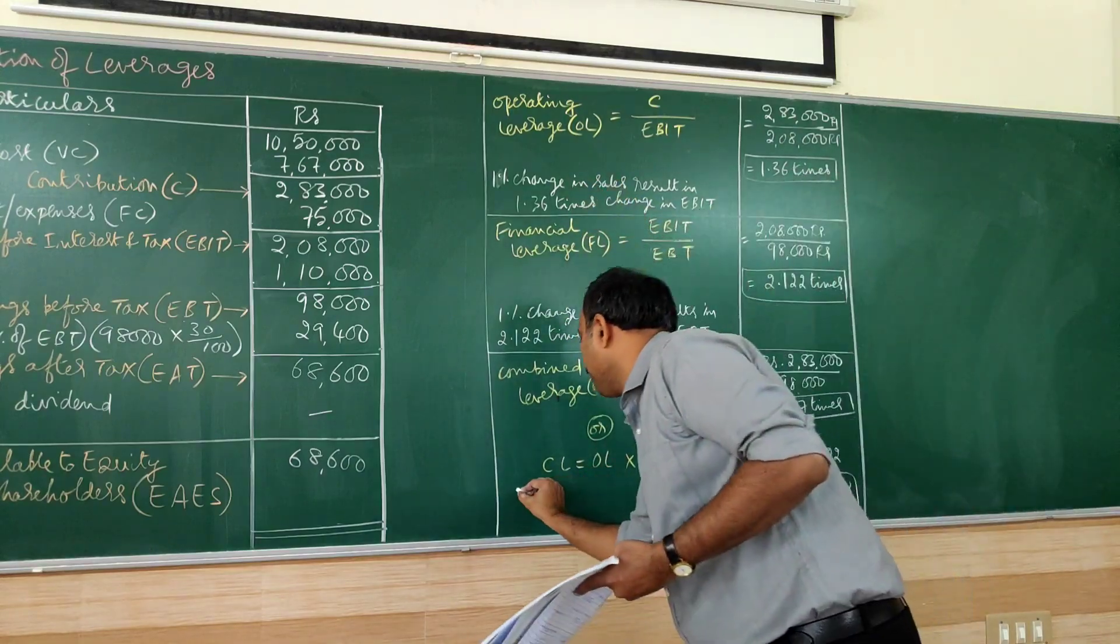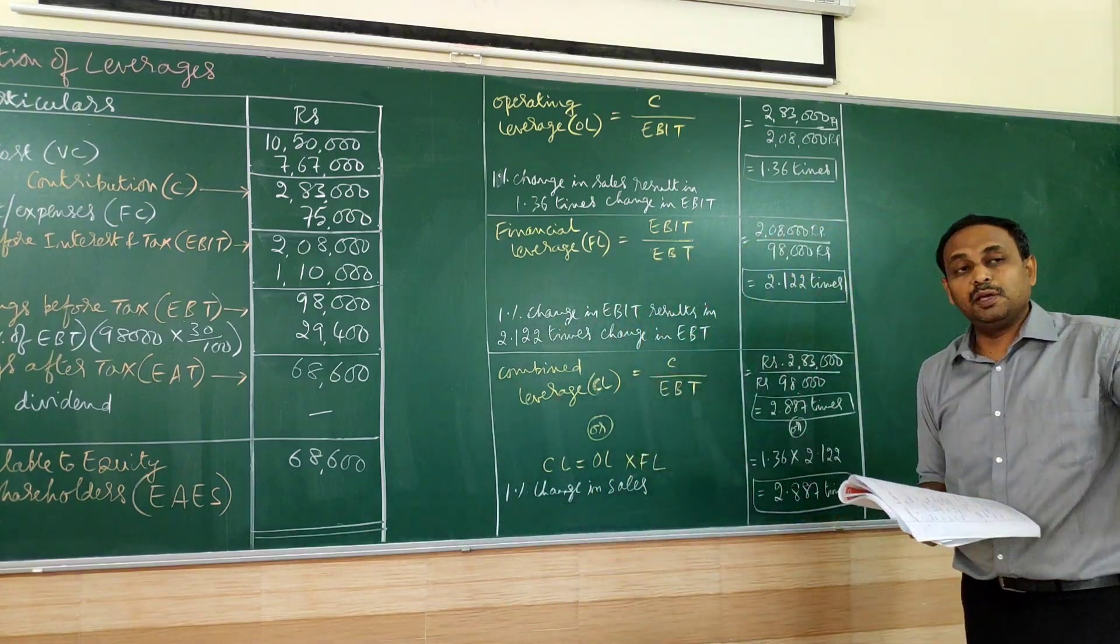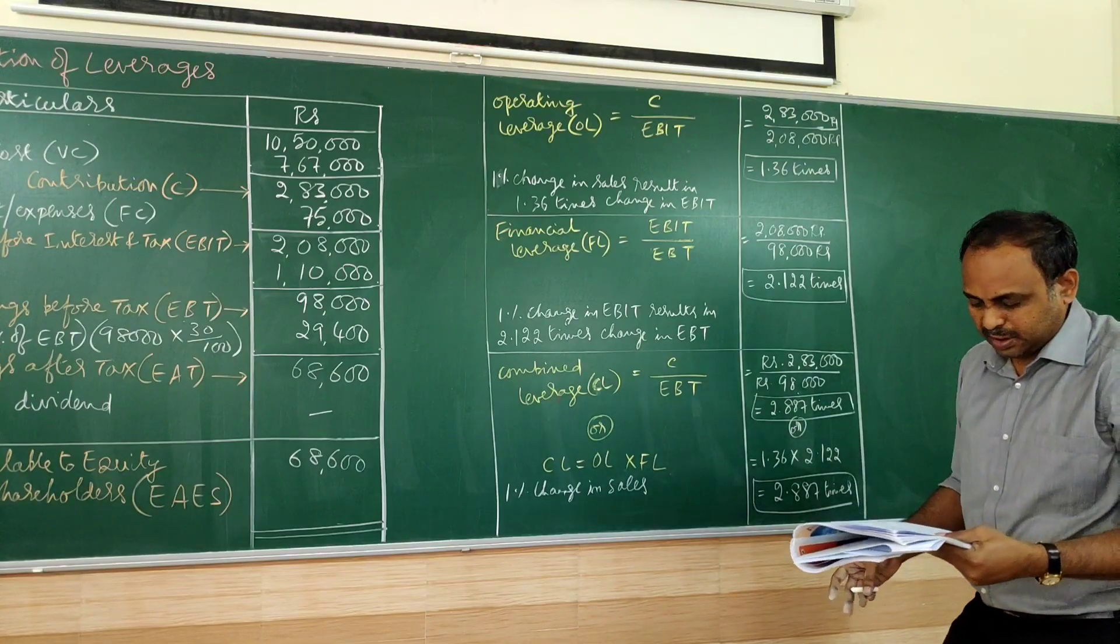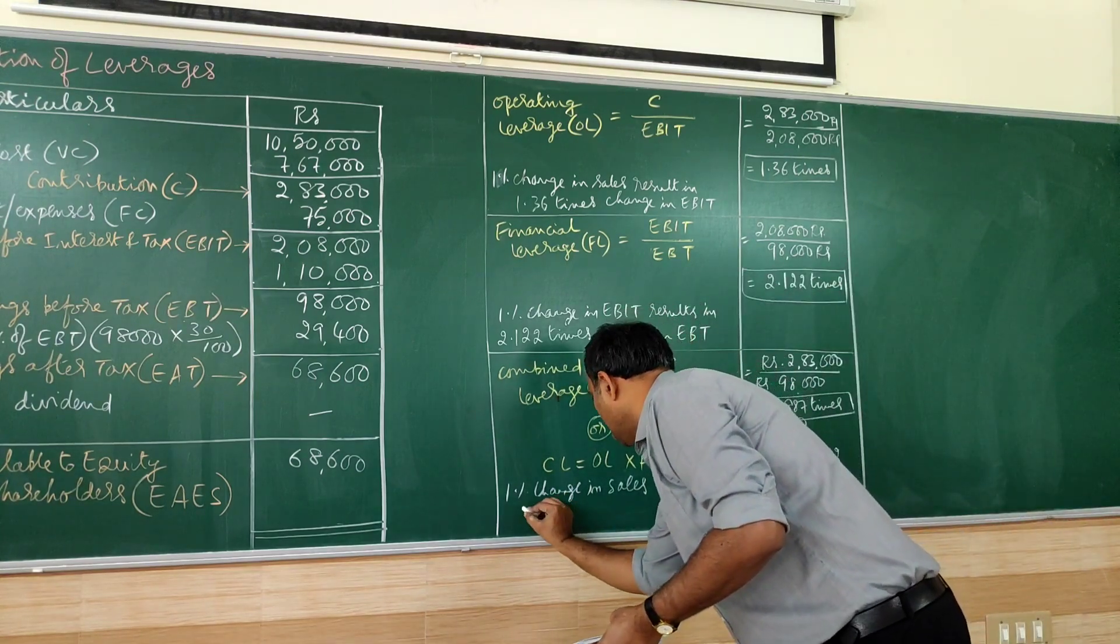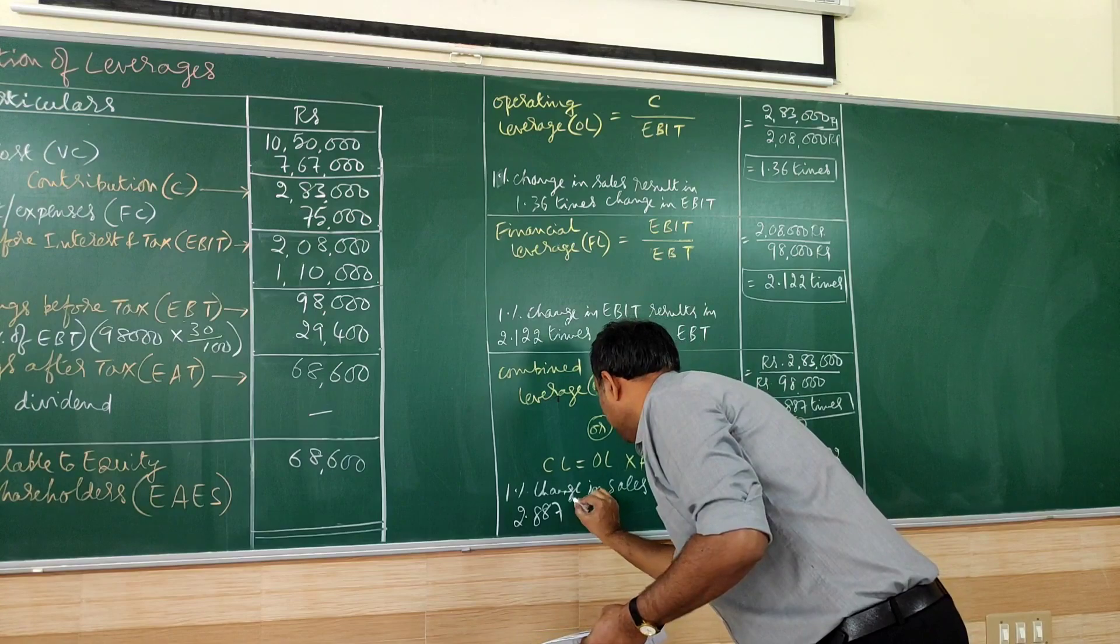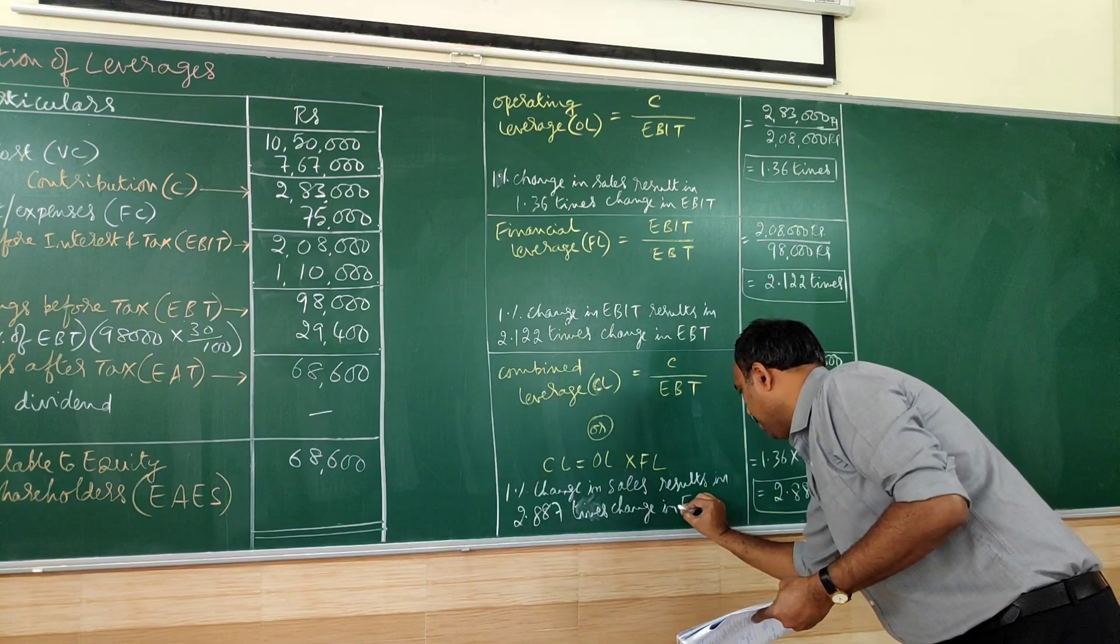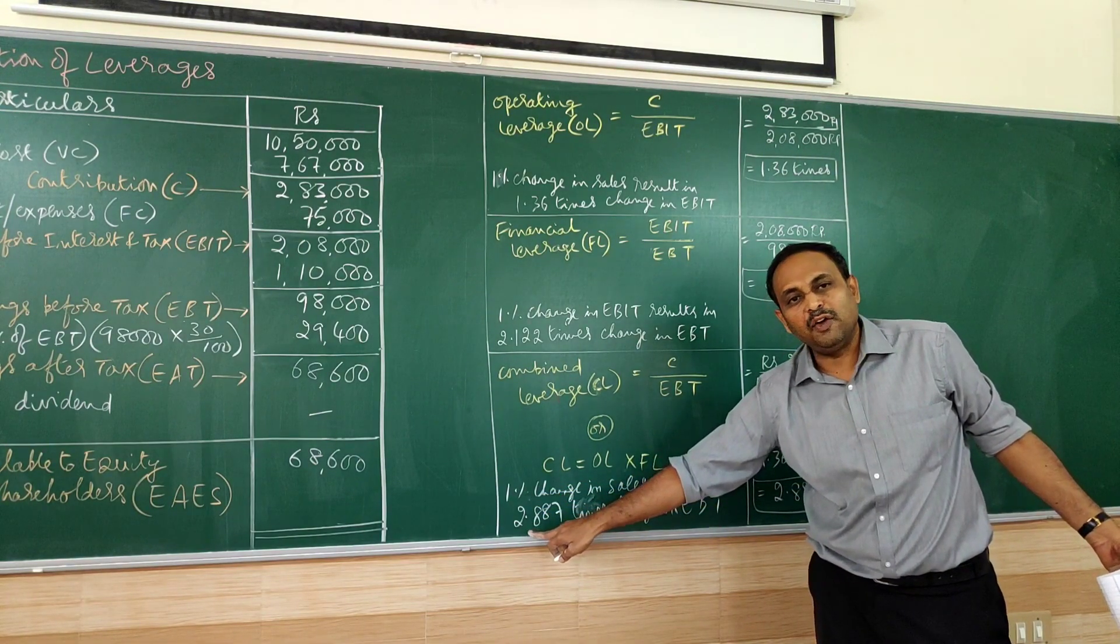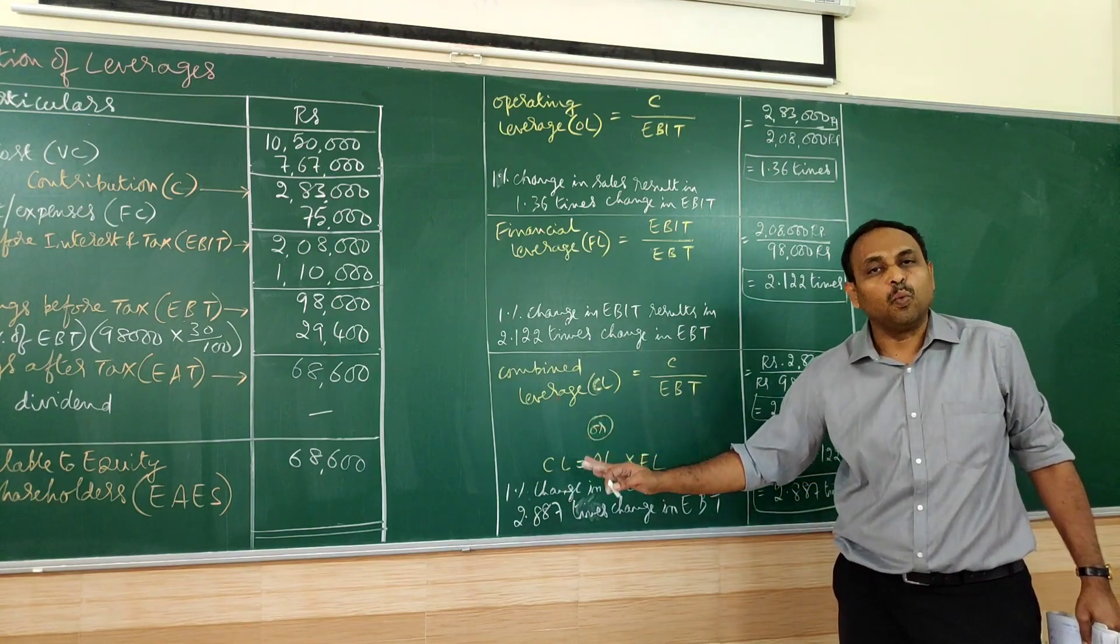What is the implication of combined leverage or the total leverage? Combination of this and this. 1% change in sales, here it is going to take the operating leverage and the financial leverage combined together. So 1% change in sales results in 2.887 times change in earnings of the business. So if sales increases by 1%, total effect on earnings will be 2.887. This is also good for the company because it is more than 1%.